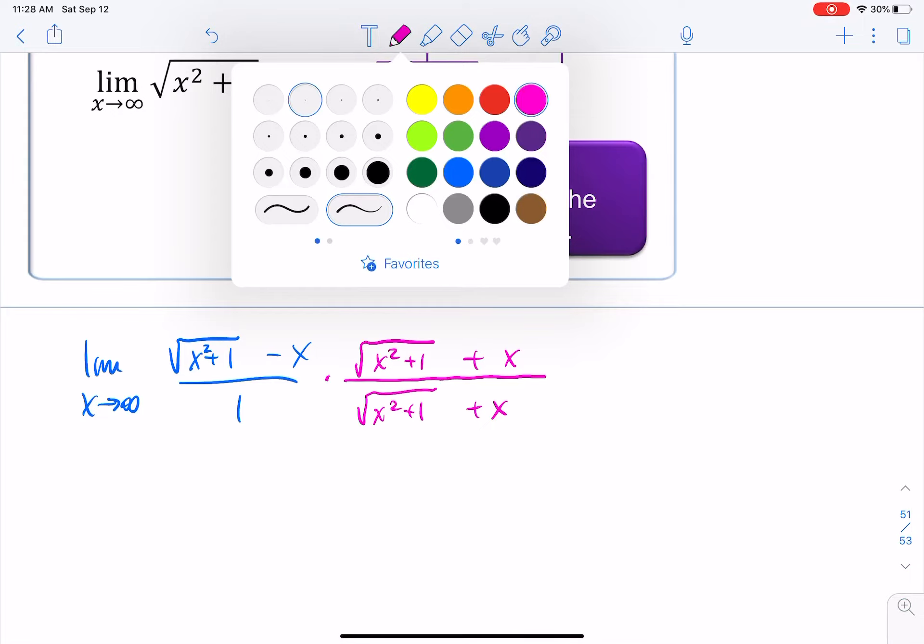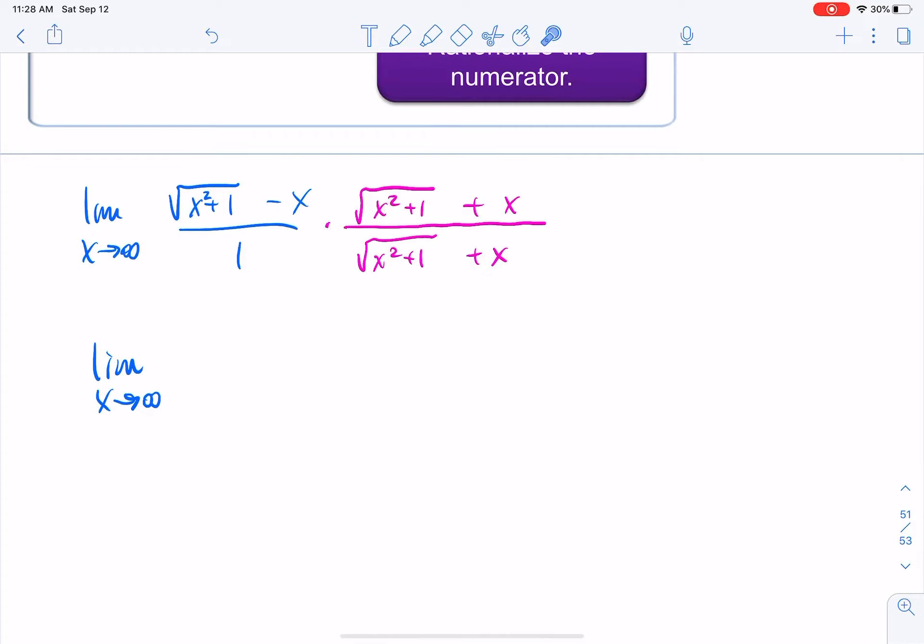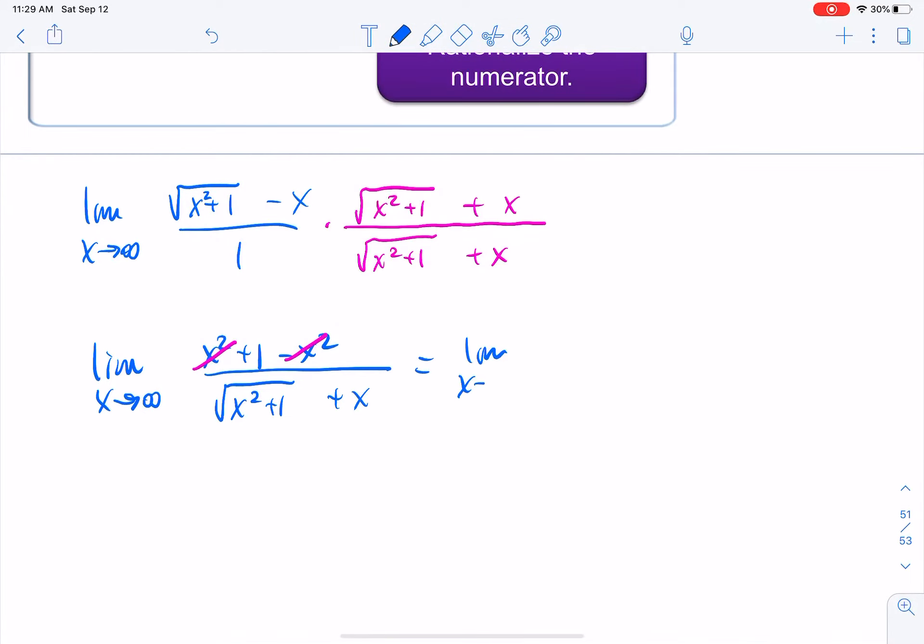Okay, and then multiply fractions as we do, top times top and bottom times bottom. The top functions like a difference of two squares, so I would multiply these two together, and these square roots would cancel, and I would just have x squared plus 1. The middle terms cancel out, and then I do minus x times x, so minus x squared. And the bottom we always leave factored, but we're multiplying by 1, so it doesn't really matter. So we have the square root of x squared plus 1 plus an x. Across the top, we can see that our x squareds cancel very conveniently, leaving us with the limit as x approaches infinity of 1 over the square root of x squared plus 1 plus x.